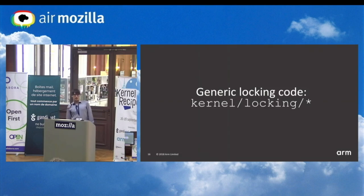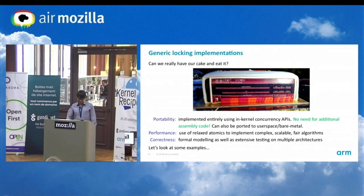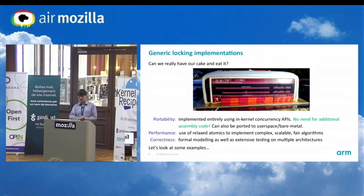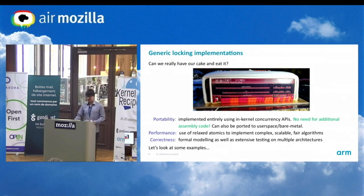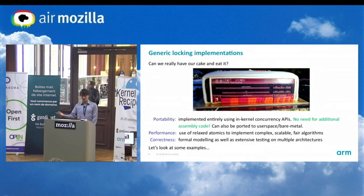So what can we do with these cool new atomics? We can use them to build generic locks, and that's precisely what we've done. We get portability because locks are implemented in core code and just work for everybody without extra assembly. You can port them to bare metal and formally verify or model-check them. We get great performance — at least as good as if you'd written it by hand in assembly. And having locks in one place means everyone can focus their efforts on that one implementation, rather than formally modeling 25 different locking implementations for different architectures.